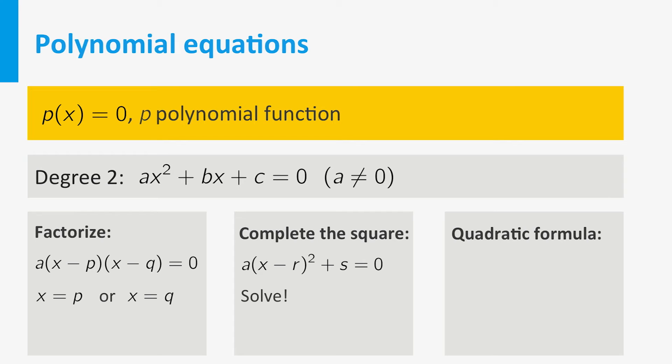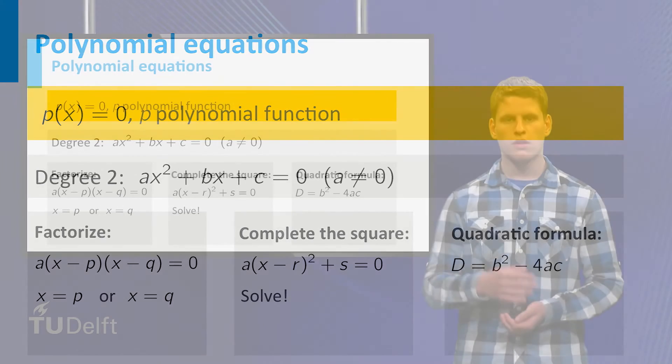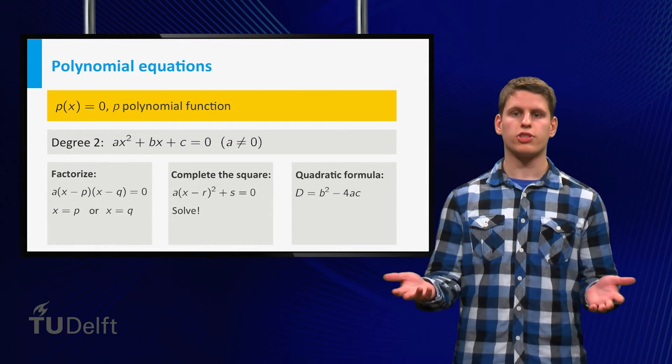Finally, you can use the quadratic formula. First calculate d, the discriminant. If d is smaller than zero, there are no solutions.